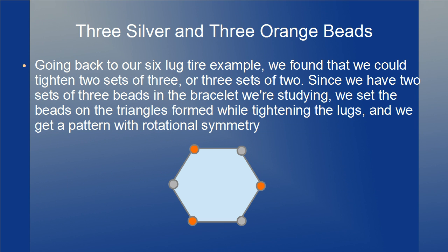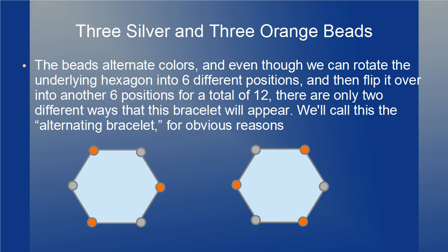Let's analyze this. Going back to our 6-lug tire example, we found that we could tighten 2 sets of 3 or 3 sets of 2. Since we have 2 sets of 3 beads, we'll set up the beads on the triangles formed while tightening the lugs, and we get a pattern that has rotational symmetry. The beads alternate colors, and even though we can rotate the underlying hexagon into 6 different positions and flip it over for another 6 — a total of 12 — there are only 2 different ways this bracelet will appear. We'll call this the alternating bracelet.